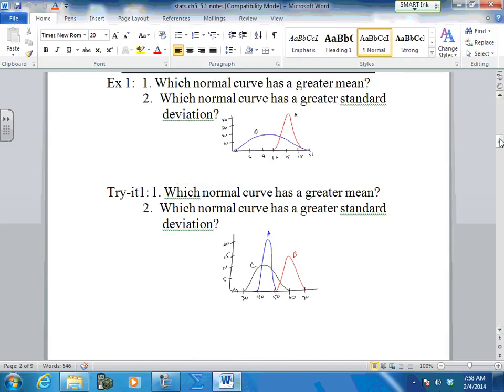So, let's take a look at this guy. Which normal curve has the largest standard deviation? A, B, or C? C. Which one has the smallest standard deviation? A. And B would come somewhere in between. The narrower, the closer to the mean. The smaller the standard deviation.